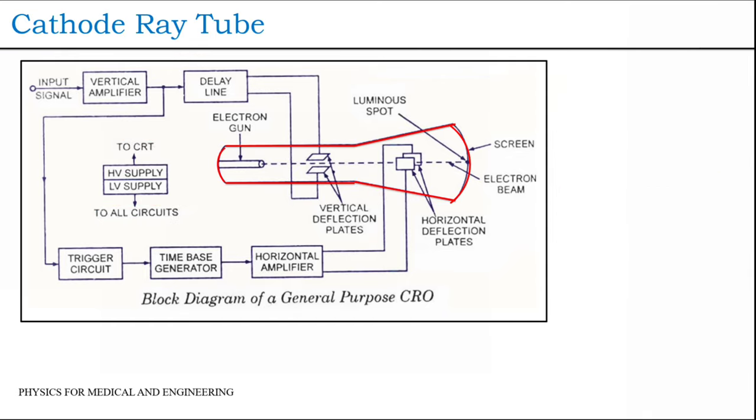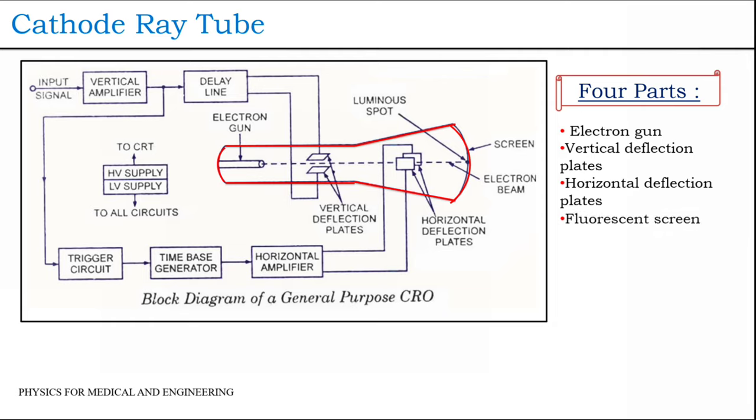The last block is a cathode ray tube, that is CRT. It is the major important block of CRO and mainly consists of four parts: electron gun, vertical deflection plates, horizontal deflection plate, and fluorescent screen.